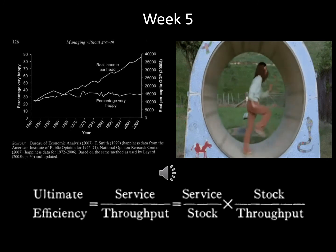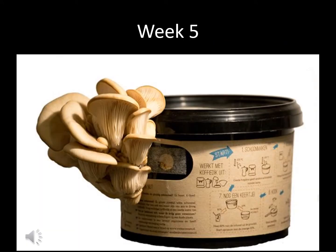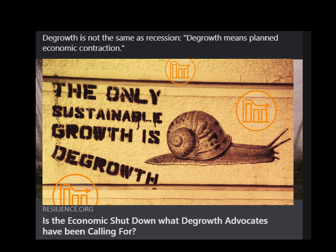We also talked about circular economy, but I forgot to mention how you can bring circular economy into your kitchen by using your coffee grounds to grow oyster mushrooms. I also forgot to mention that the pandemic recession should not be confused with the planned economic contraction that is advocated by the degrowth movement.